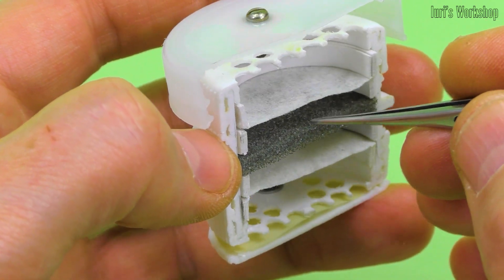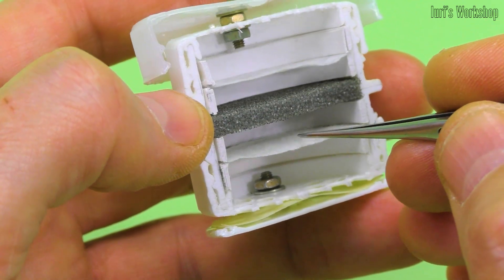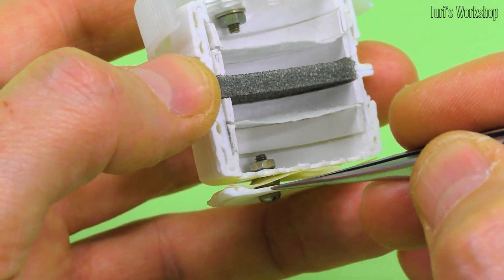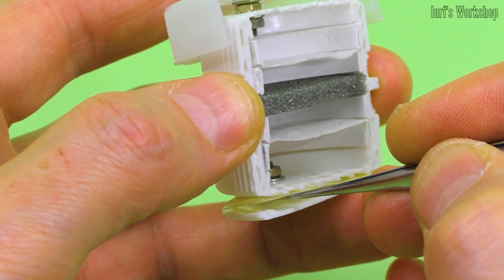This is the first HEPA filter. This is a foam filter. And this is the second HEPA filter. The inlet valve membrane is located under the protective disc.